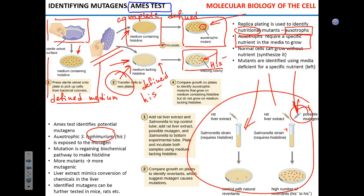Those random mutations will affect all different genes of Salmonella, and there is a non-zero chance they will affect the gene that was previously mutated — the gene because of which Salmonella cannot produce histidine. There is a non-zero chance that the mutation making Salmonella auxotrophic will revert back to its original genotype. For example, if the original base pair GC was mutated to AT, there is a chance the mutagen converts it back to GC.